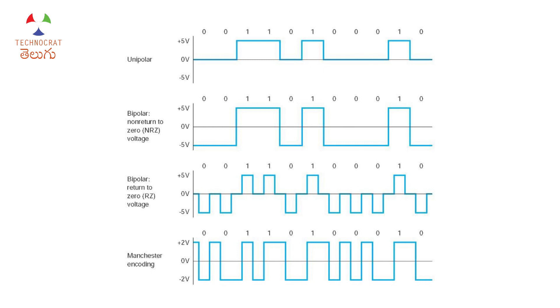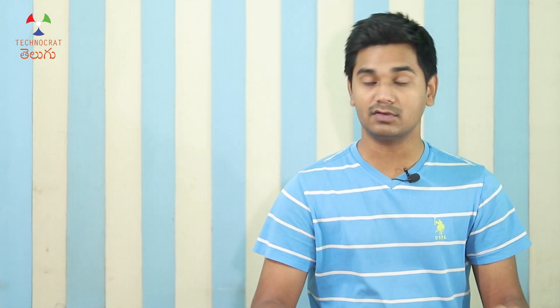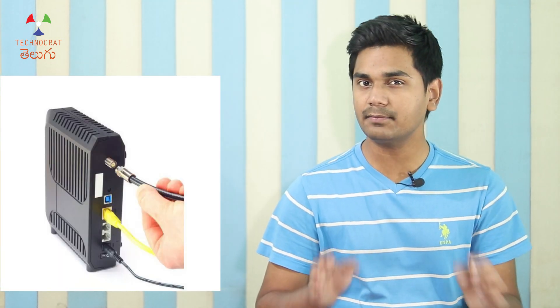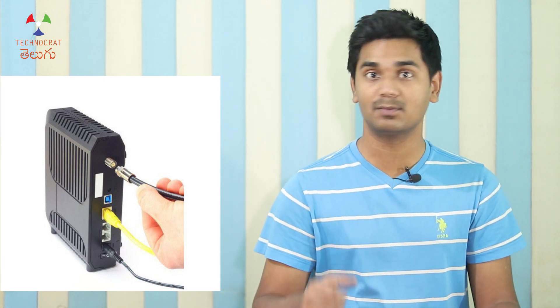In the next two graphs, we have plus 5 volts or minus 5 volts, and plus 2 volts and minus 2 volts. In this case, we have a DSL line and a dial-up connection. We also have routers and a modem.